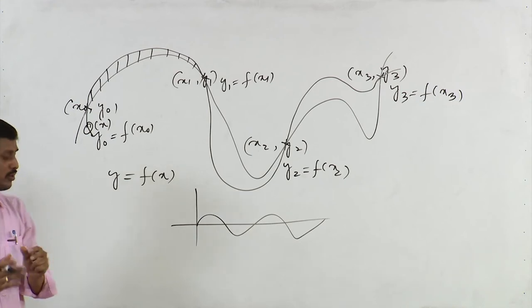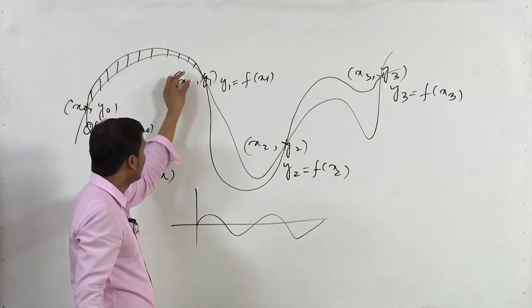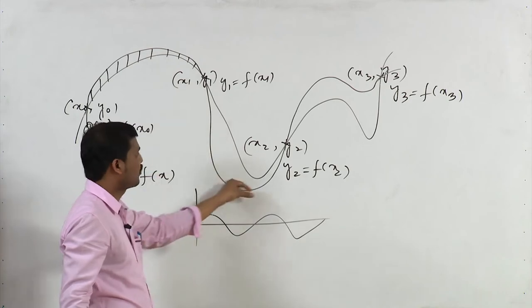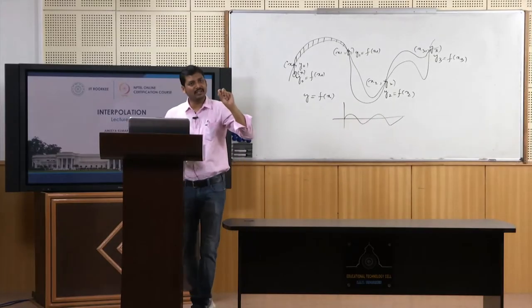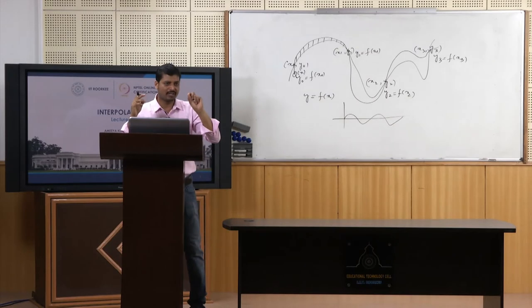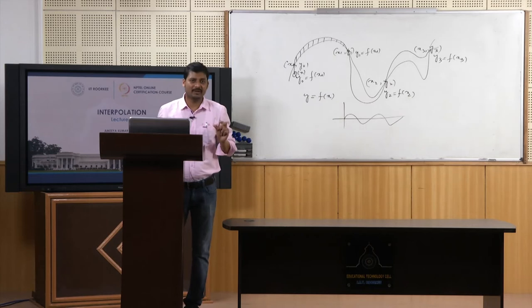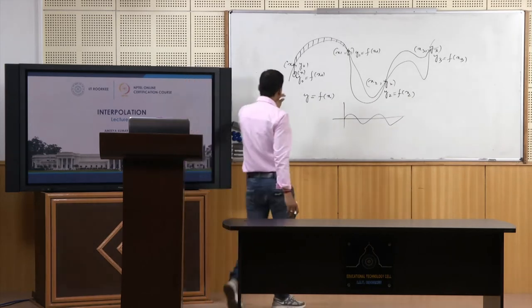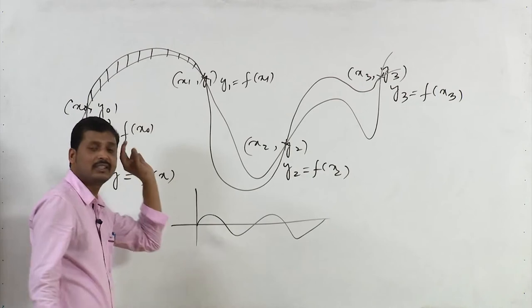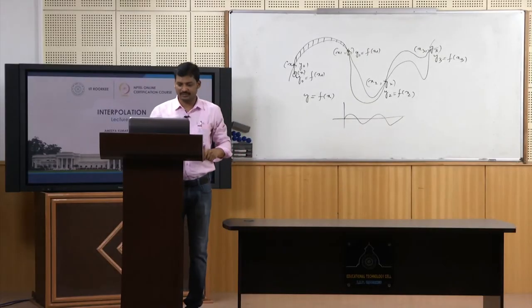The error should be minimized. If the points are very close to each other, this error can be minimized — this is the first condition we can assume.